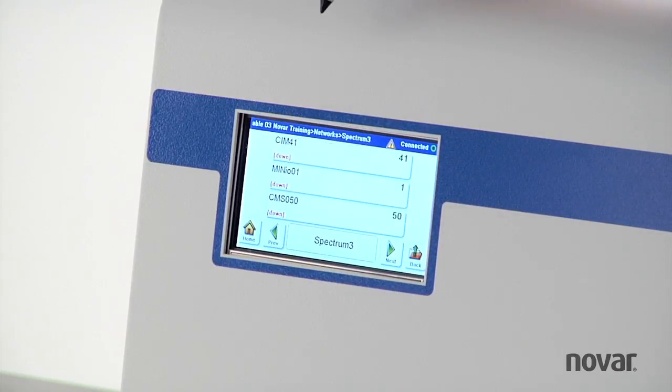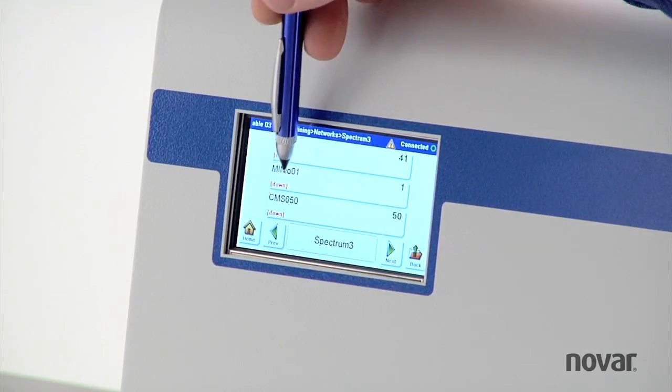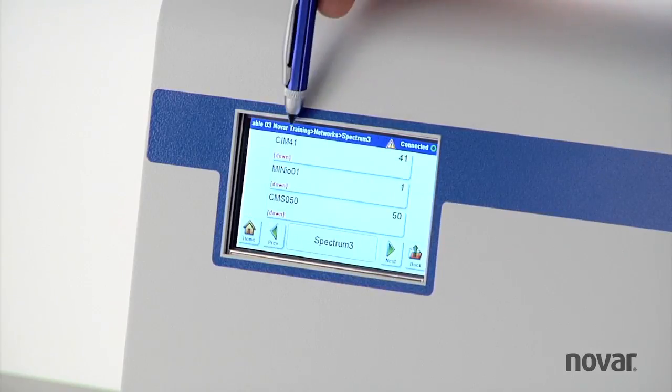Here are my three modules: a CIM 41, a MinIO 01, and a CMS 050. You can see all three of those are down.